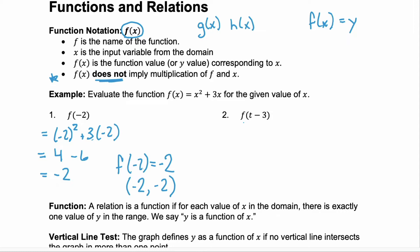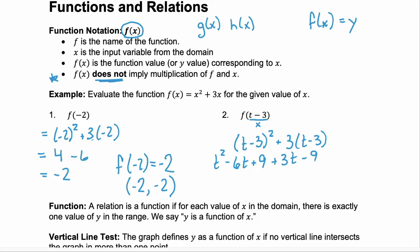What if we're asked to evaluate f of t minus 3? All it's telling you to do is replace your x with t minus 3. So x squared plus 3x would become t minus 3 squared plus 3 times t minus 3. t minus 3 squared gives us a perfect square trinomial: t squared minus 6t plus 9. Then we distribute the 3 to get plus 3t minus 9. Combining like terms, we have t squared, negative 6t plus 3t is negative 3t, and 9 and negative 9 cancel.